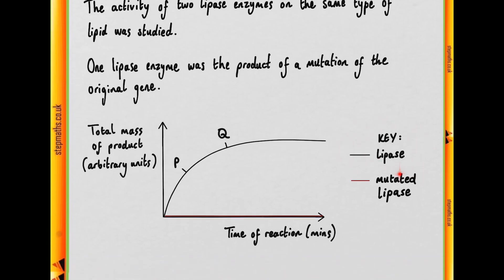In the case of the original lipase, whereas the mutated lipase did not change the amount of product produced, and presumably that would mean that it was not having any activity breaking down that particular lipid.